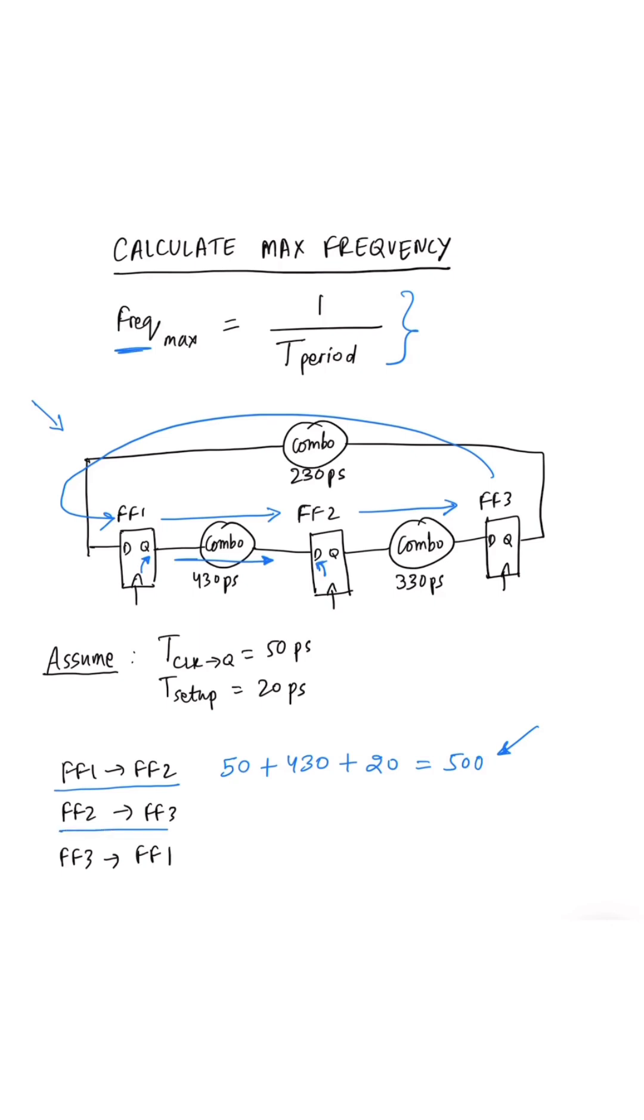Similarly, for FF2 to FF3, we have 50 plus 330 plus 20, which is 400. And for FF3 to FF1 timing path, we will have 50 plus 230 plus 20, equal to 300.